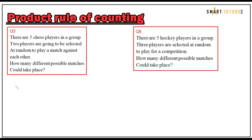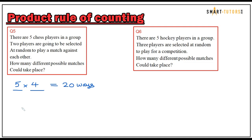Question number five: There are five chess players in a group; two players are going to be selected at random to play a match against each other. How many different possible matches could take place? You need to select two players, so draw two slots to multiply. The first player is chosen from five; after that you have four remaining, so five times four is 20 ways.